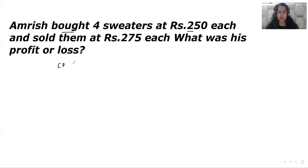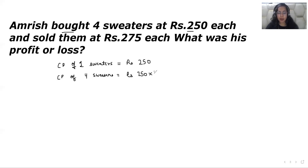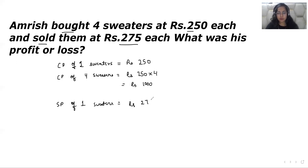Since 'bought' means CP, the cost price of one sweater is Rs.250. So the CP of four sweaters is Rs.250 multiplied by 4, which is Rs.1,000. Similarly, the selling price of one sweater is Rs.275. So the selling price of four sweaters is Rs.275 multiplied by 4, which is Rs.1,100.